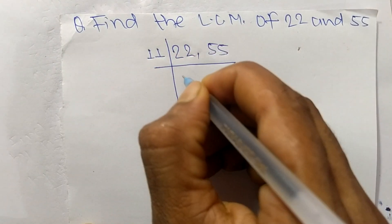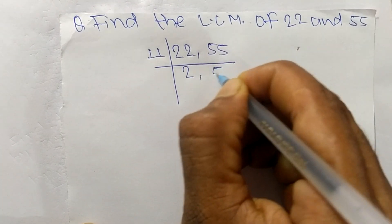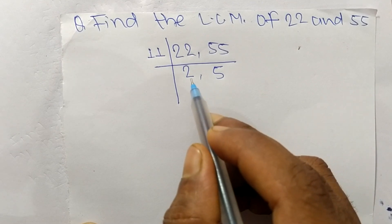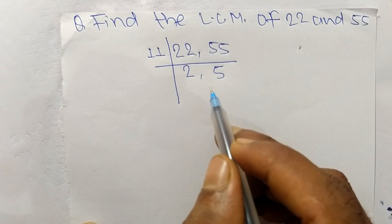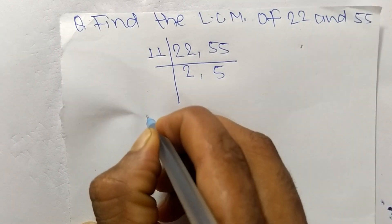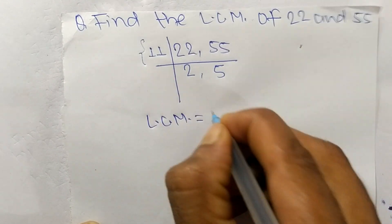11. So 11 times 2 means 22, and 11 times 5 means 55. Now we have numbers here 2 and 5 which are not exactly divisible by other numbers. So its LCM is equal to, from this part, it